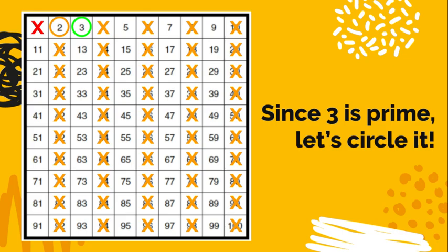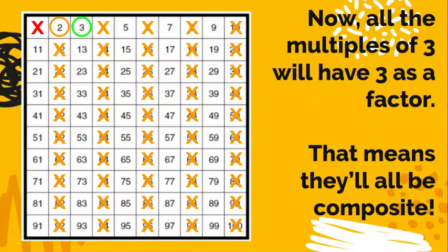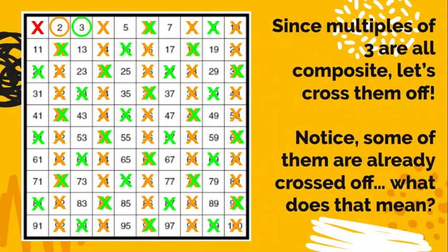Now we get fancy again. Using the same logic we used with 2, all the multiples of 3 are going to have 3 as a factor, like 6 and 9 and 12. All of those numbers have 3 as a factor. So that means they're all going to be composite. They can't be prime if they have 3 as a factor. So I'm going to take that same color, green, and cross off all of my multiples of 3.